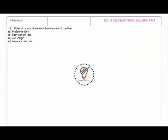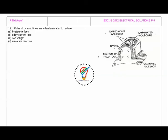Next question is: the poles of DC machines are often laminated to reduce hysteresis losses, eddy current losses, iron weight, or armature reaction. As you can see here, this is the pole of a DC machine.